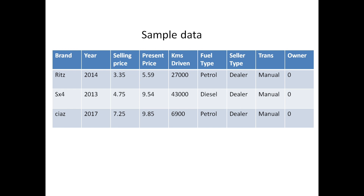The dataset also has other features like fuel type, transmission type, and owner type. We will use some features from this dataset to predict the selling price of the car — that is the agenda of this video.